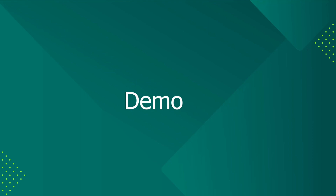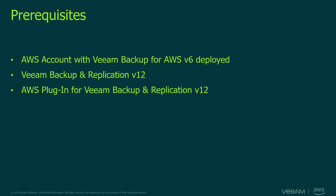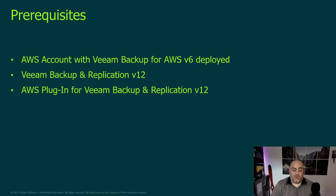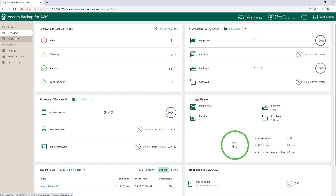Let's move to a quick demo of how to connect Veeam Backup and Replication and Veeam Backup for AWS. The prerequisites for this demo are to have an AWS account with Veeam Backup for AWS deployed, Veeam Backup and Replication server version 12 installed, and have the AWS plugin for VBR installed on the VBR server. So now let's go and connect Veeam Backup for AWS into Veeam Backup and Replication.